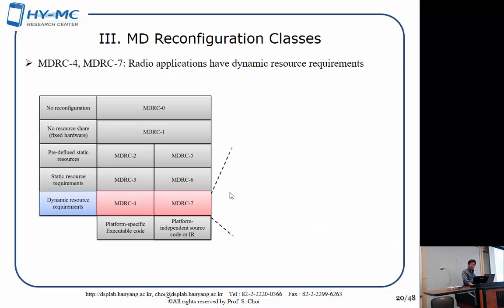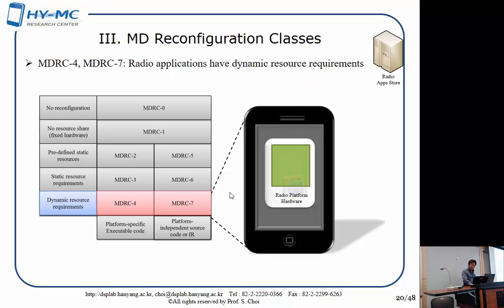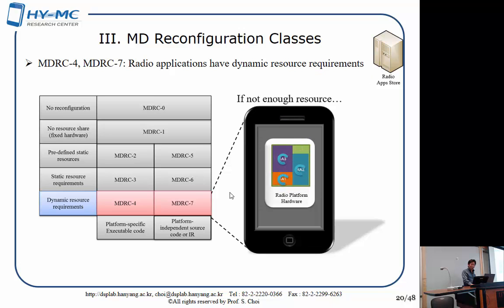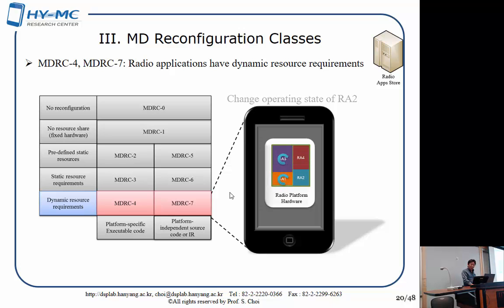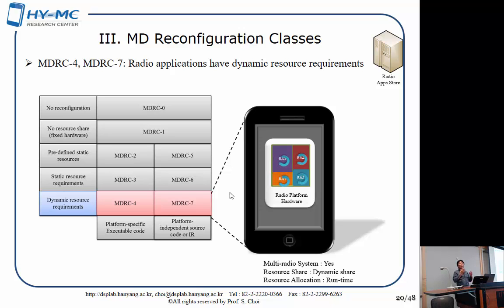Classes 4 and 7 configure the mobile device with desired radio application code. If you want to add a new radio application and resources are not enough, instead of denying as in class 3 and 6, you can change the operating mode of currently running radio application code, reduce it, and have the new one downloaded — this is dynamic resource sharing. Static resource sharing and dynamic resource sharing are related to static linking and dynamic linking respectively.